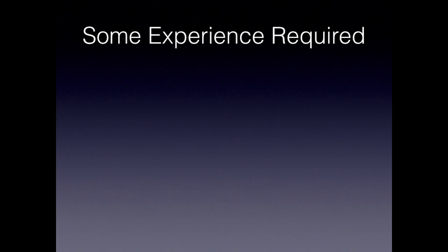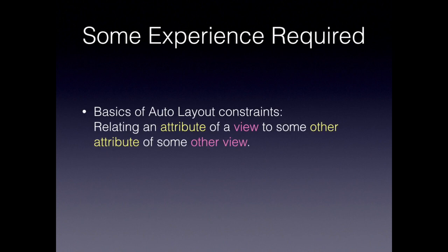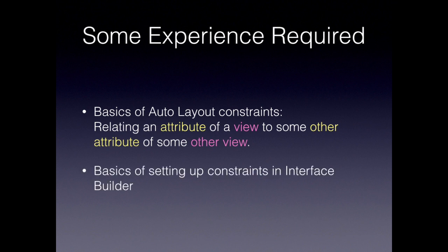This talk has some experience required - this is not going to be a basics of auto layout session. I'm not really going to have time to explain what auto layout is or what it's for. Hopefully you all have some experience with it. A constraint, quickly defined, is relating some attribute of a view to some other attribute of some other view - it's like a rule that helps the system know how to lay out the views. Hopefully you've also done some basic constraint setup in Interface Builder.